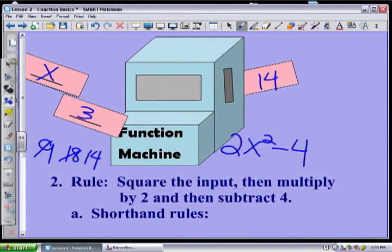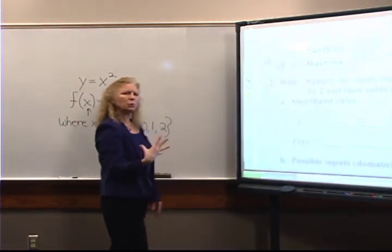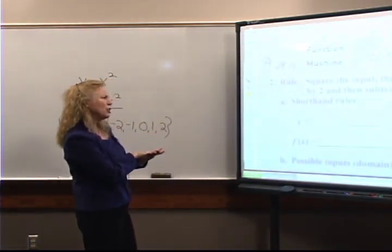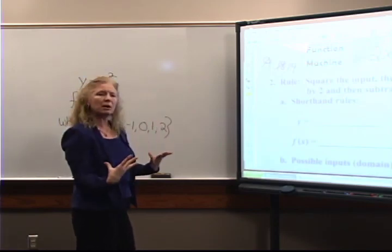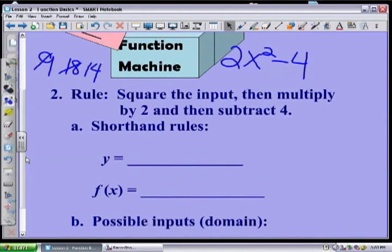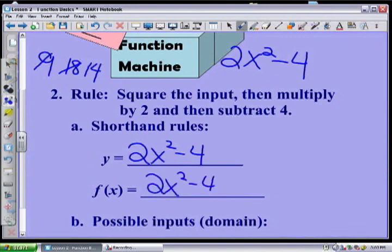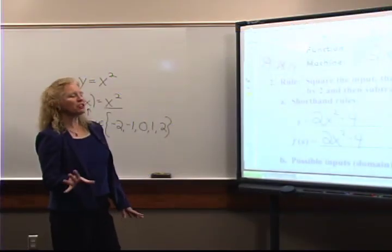Then I subtract four, and what would come out is 2x² minus 4. Anytime you're given a rule, make sure you've got a full equation. If you just randomly put 2x² minus 4, we don't know what you're talking about. But if you say y equals 2x² minus 4, or f of x equals 2x² minus 4, then I at least have a rough idea of what's going on.